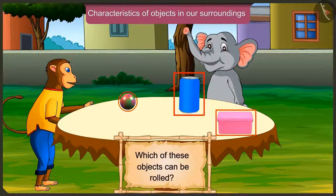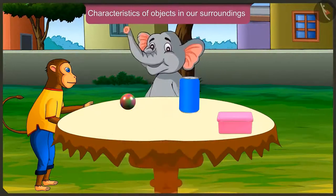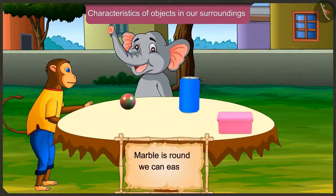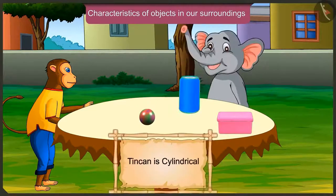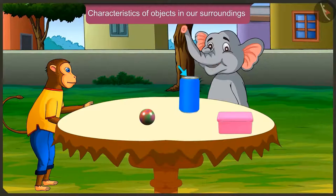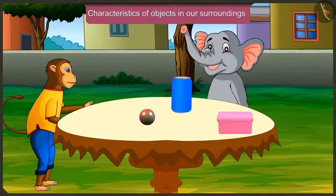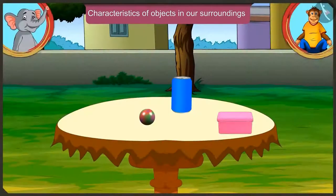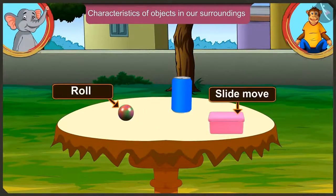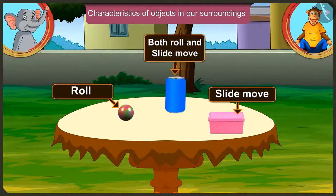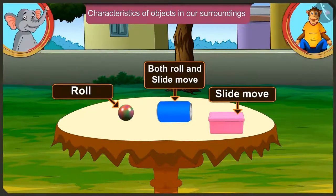Tell me, which of these objects can be rolled? This marble is round — we can easily roll it. And this tin can is cylindrical. Cylindrical objects have a flat surface on top and bottom, so we can slide them. But since their side surface is curved, we can also roll them. You have understood very well which objects can be rolled, which can be slid, and which can be both rolled and slid.